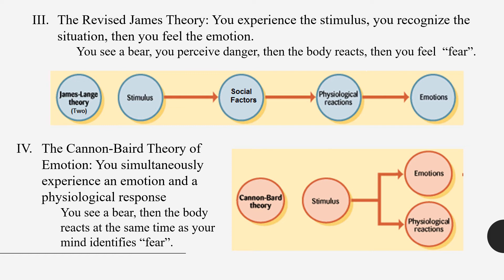This revised James-Lange theory persisted for a long time until others started tinkering with it. Another group of researchers named Cannon and Bard contended through their research that maybe our physiological reactions and our emotions were actually two discrete things. Something happened, we reacted, and while we were reacting we were also simultaneously forming emotions that could help us sustain our actions or move in different ways. Their big insistence was that these things did not necessarily need to be tethered together — you could feel fear and react at the same exact time.